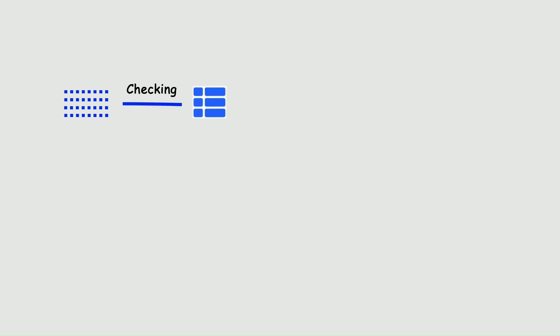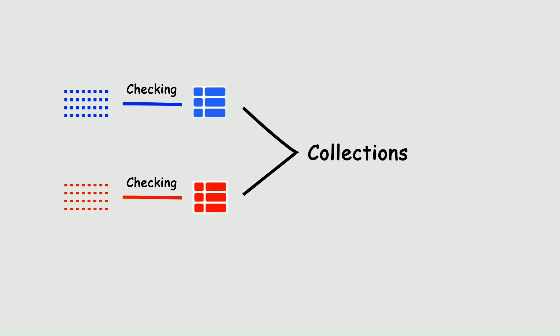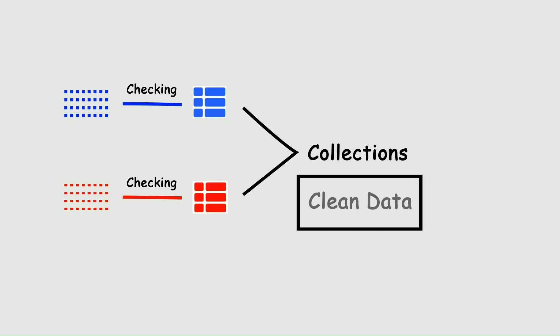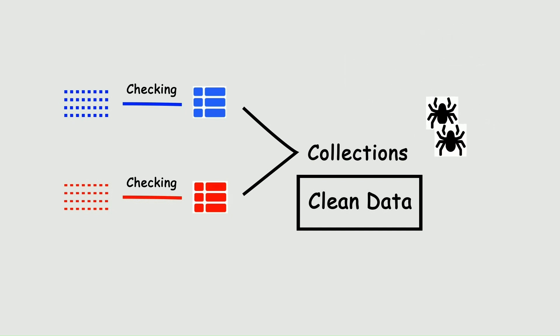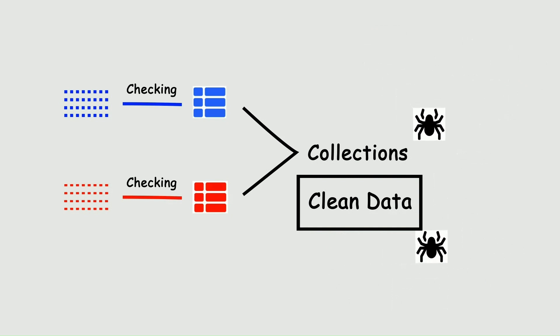First of all, schemas are a powerful tool for data quality. When reading and writing data, it's important to check every document against its schema. This guarantees your collections hold only clean data, and that bugs and invalid documents are caught before they can impact downstream data products.